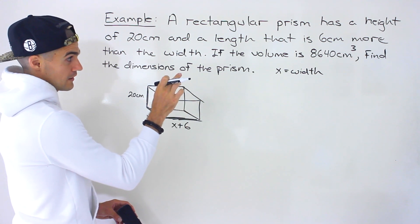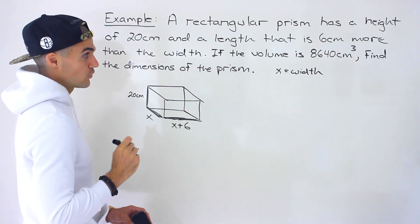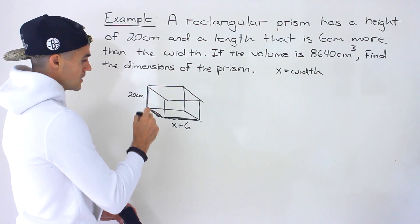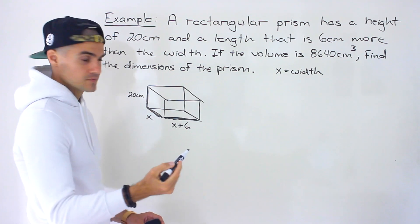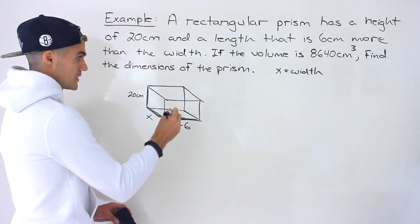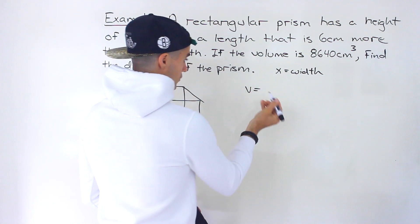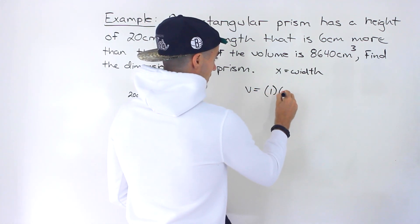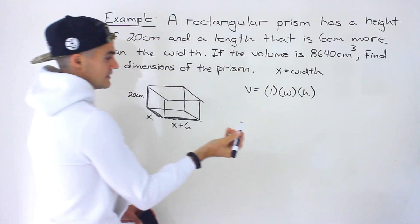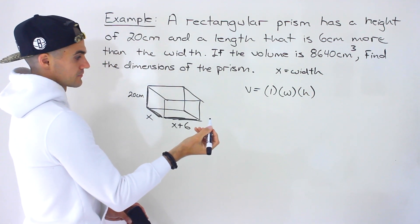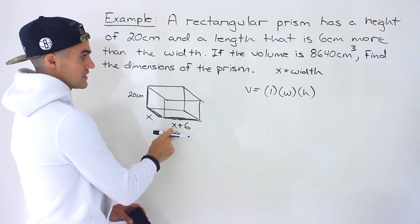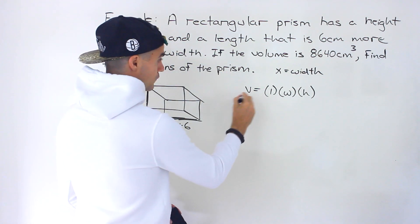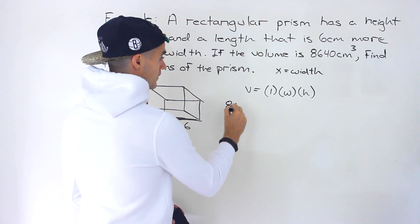Then we're told the volume is 8640 centimeters cubed. We have to find the dimensions given that information. Notice that we can create an equation because we know in general the volume of a rectangular prism is length times width times height. We could plug in all of these for the length width and height and then plug in the 8640 for the volume.